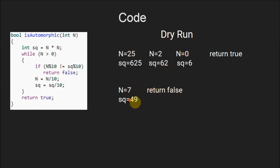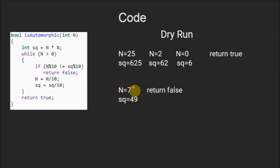Now let us assume the value of n is 7. The square will be 49. Since n is greater than 0, we enter the loop and compare the last digits of n and sq — that is, 7 and 9. Since 7 is not equal to 9, false is returned by the isAutomorphic function.